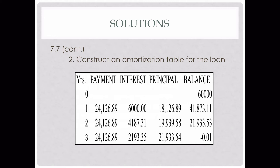On year two, you should see your interest decline because your balance declined. We multiplied 10% by our balance of $4,187, and we get $418.73. We subtract that from our payment to find our principal — because interest plus principal equal payment — and we get $1,993.96. As our interest goes down, our principal goes up. We subtract that principal from the balance of year one and get $2,193.35.